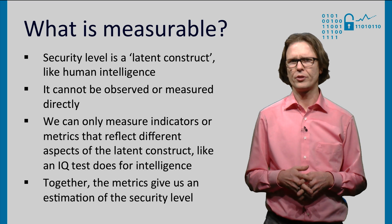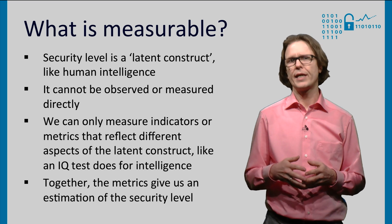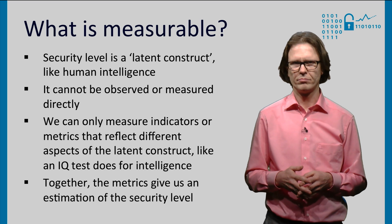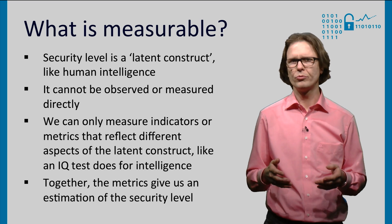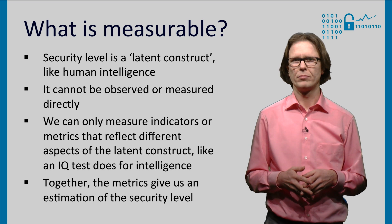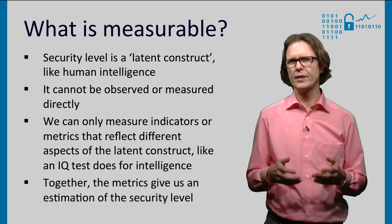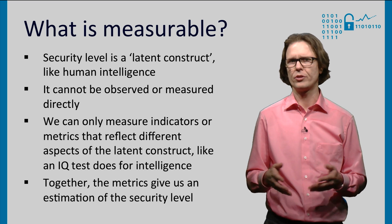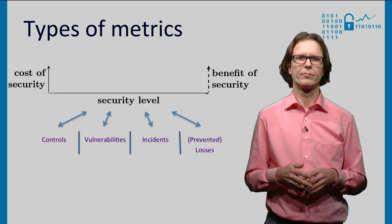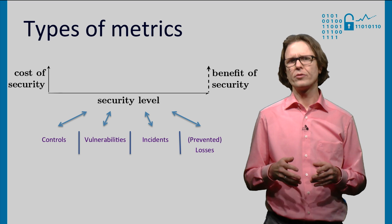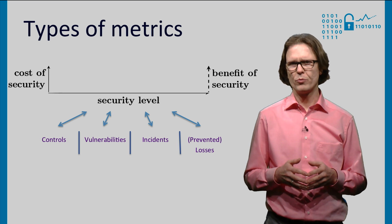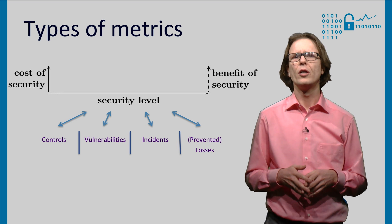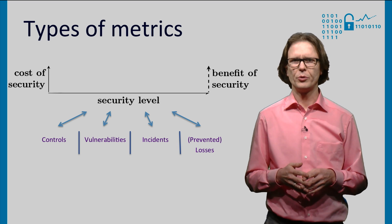It's the same for security. We can measure indicators or metrics that reflect different aspects of the security level. They all have their own strengths and weaknesses. Like an IQ test, you ideally want to include all these aspects when developing an estimation of the security level. Using the horizontal axis of the framework, so moving from left to right, from cost to benefits, we can distinguish four types of security metrics.